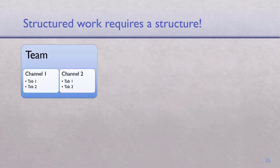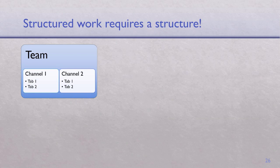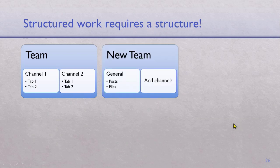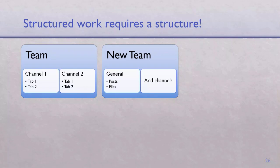How do we structure the structured work? You create a team for each project. What does the team contain? It contains channels, and channels contain tabs. By default a general channel gets created, where you can discuss and upload files. These files are not uploaded to OneDrive — there is separate storage for Teams, so it doesn't interfere with anybody's OneDrive. Then you add as many channels as required.